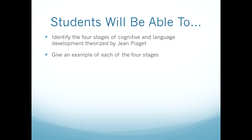Before beginning, I'd like to review our goals for this lesson. After viewing this presentation, students will be able to identify the four stages of cognitive and language development theorized by Jean Piaget, and be able to give an example illustrating each of the four stages.